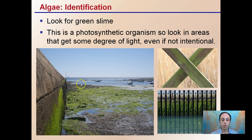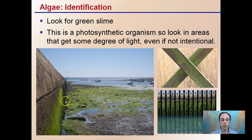The identification — well, it looks like green slime. It's a photosynthetic organism, so look in areas that get some degree of light, even if it's not intentional. This could be on the underside of something, or if there are two things lying on top of one another with a little light getting in, that's an area where algae could be growing. You see this on a large scale with high and low tide exposing all areas where algae can grow.